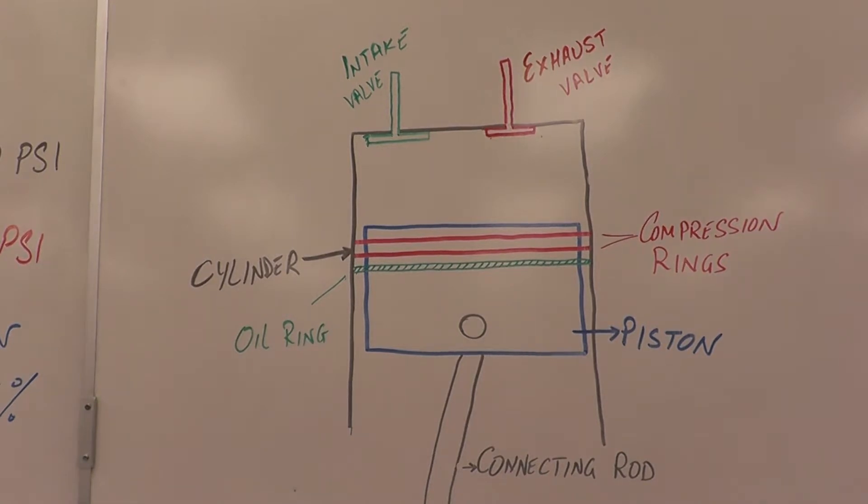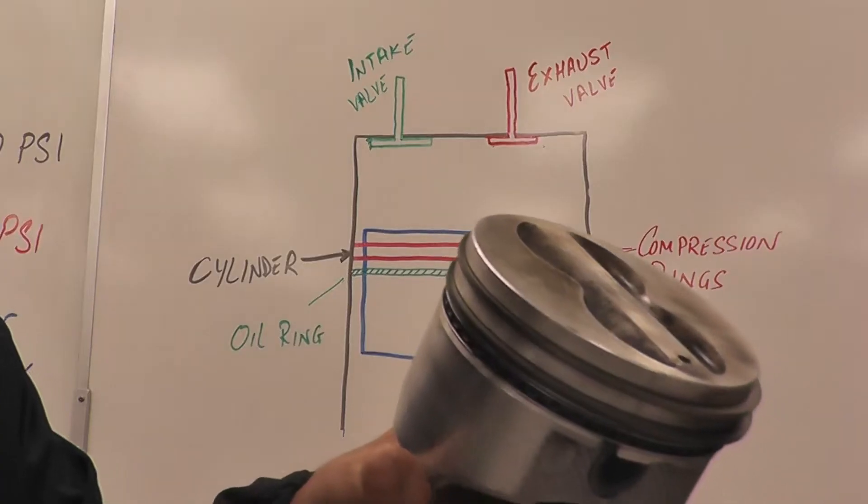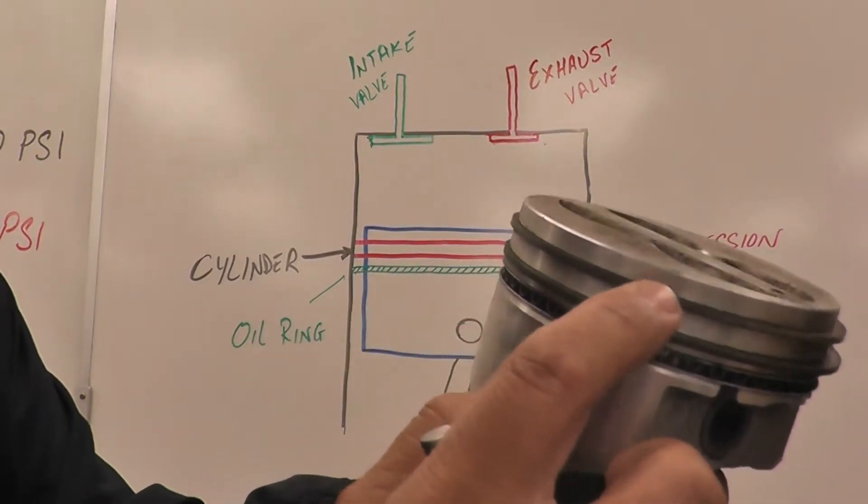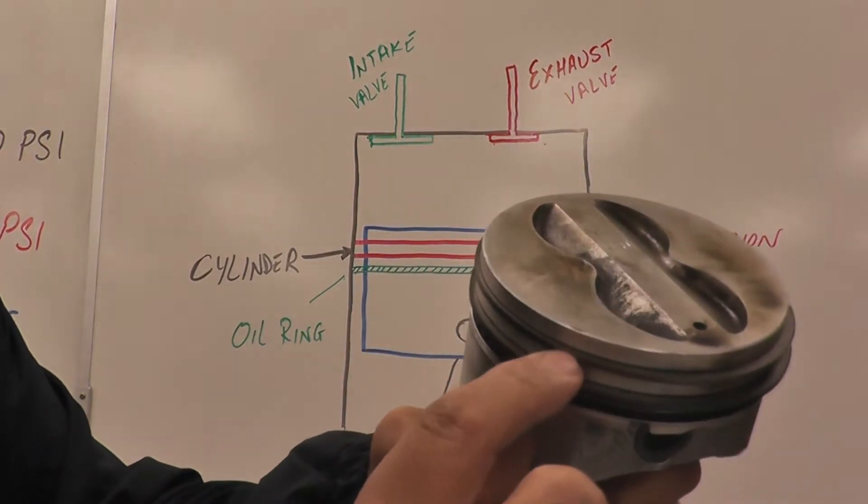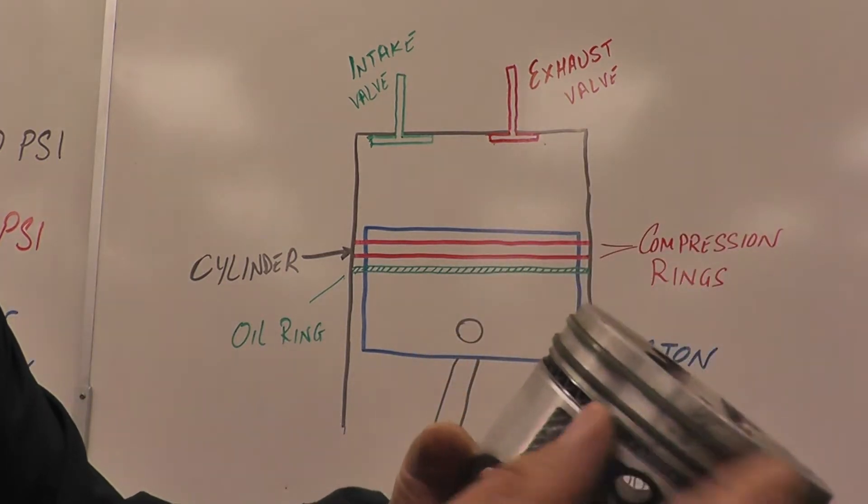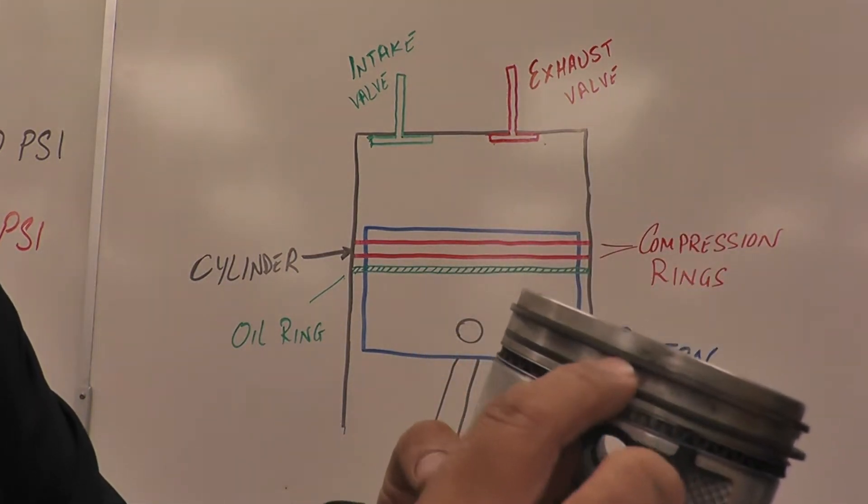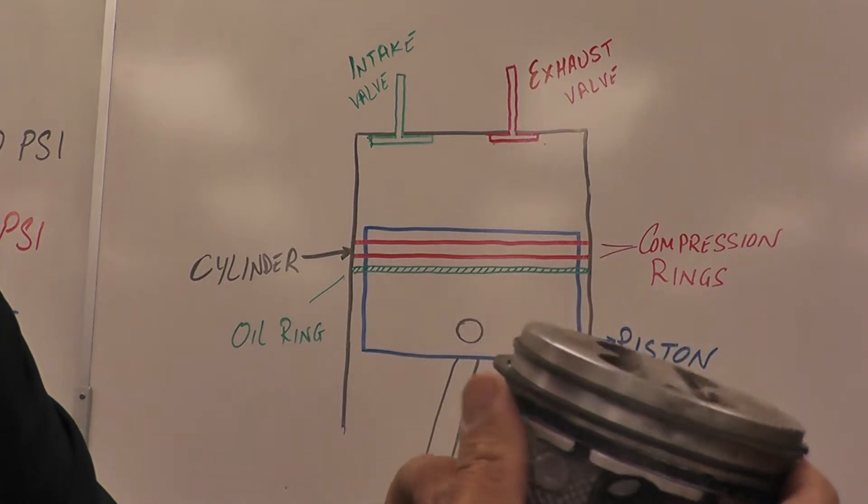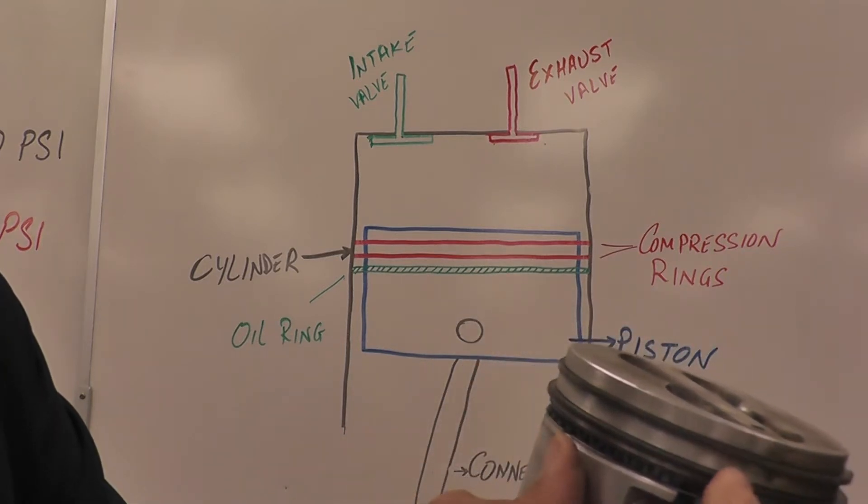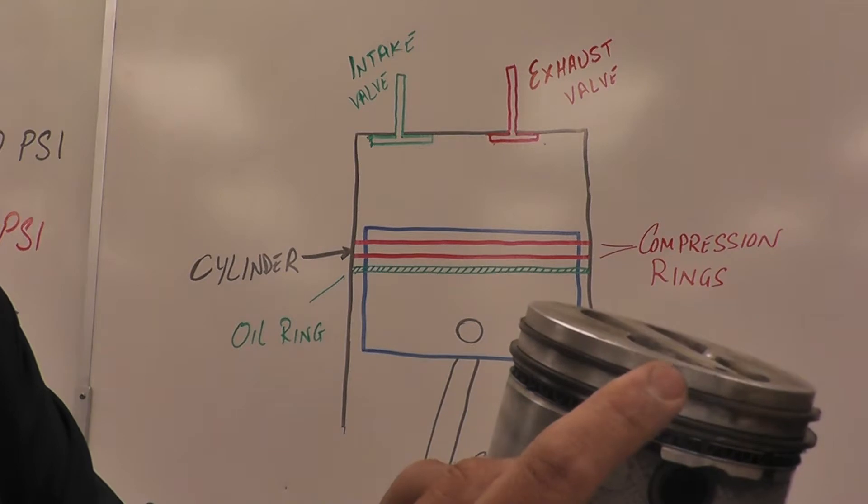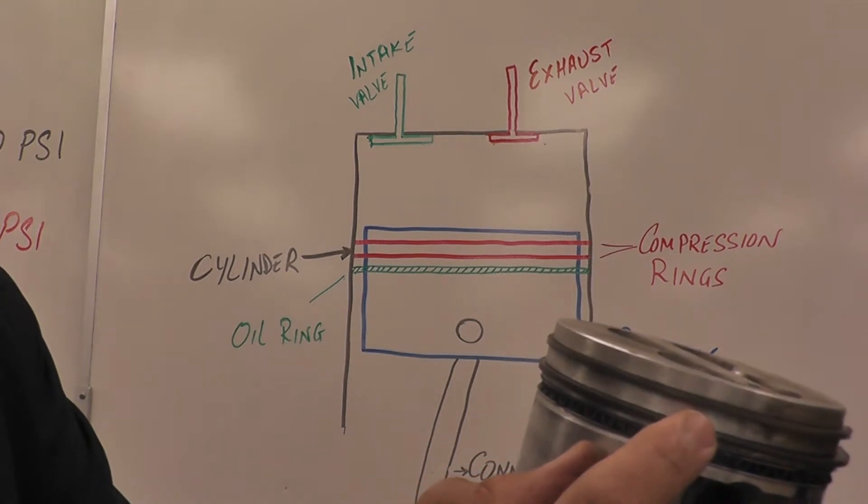Compression test is performed to see the condition of the valves and compression rings. Here are the three rings on the piston. This is a four-stroke engine. The top ring is a compression ring, so is the second one. When the piston goes up, these two rings touch the cylinder walls and create the compression in the engine.